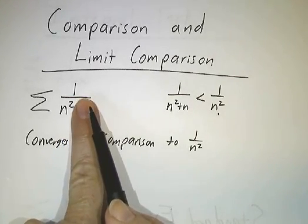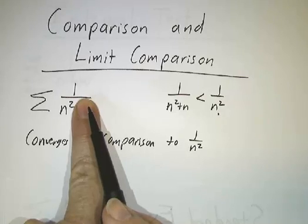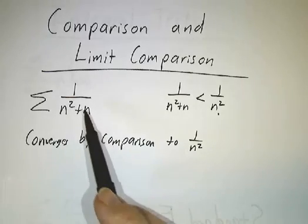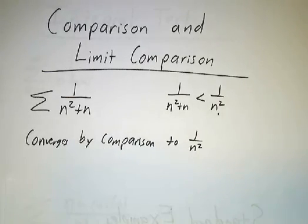So you often get really complicated stuff and you shouldn't let the extra complication phase you. You say, oh, this is behaving like 1 over n squared. In fact, it's less than 1 over n squared. So we do better than 1 over n squared, which means we win.